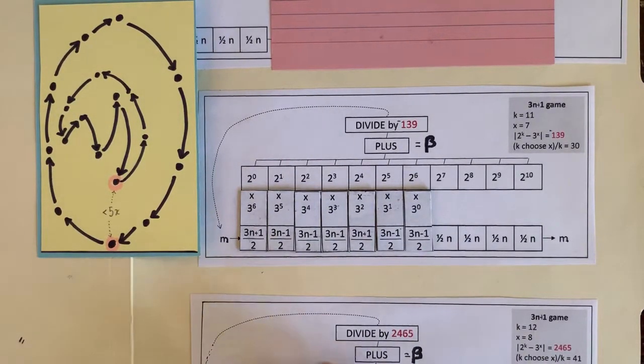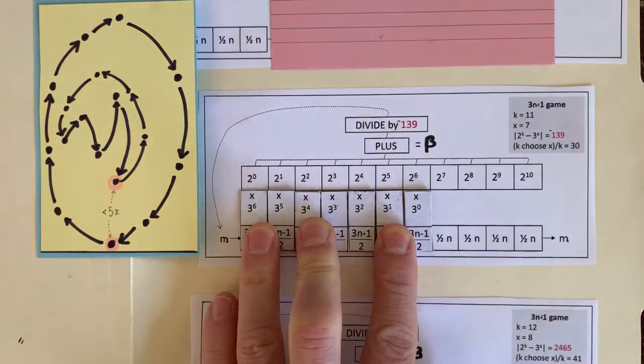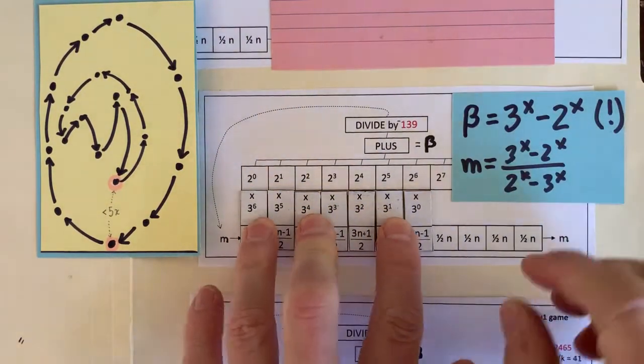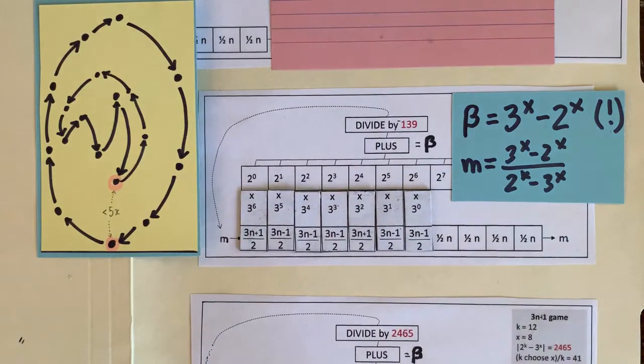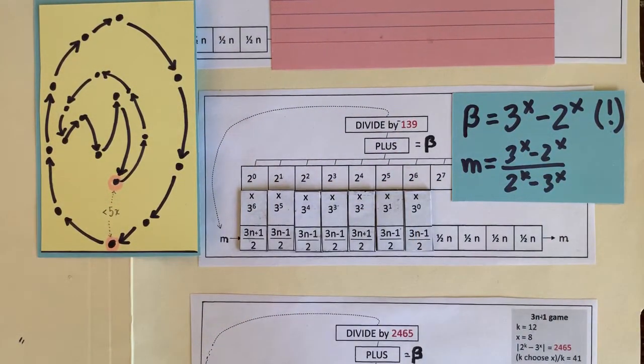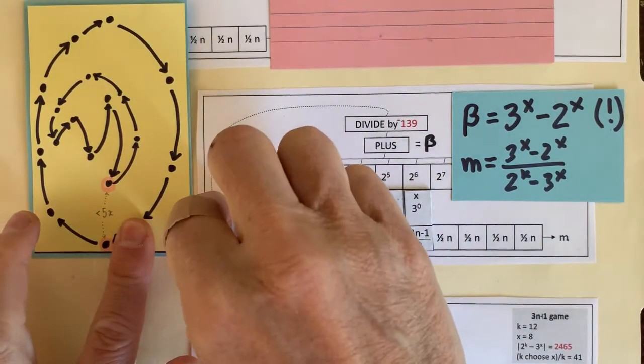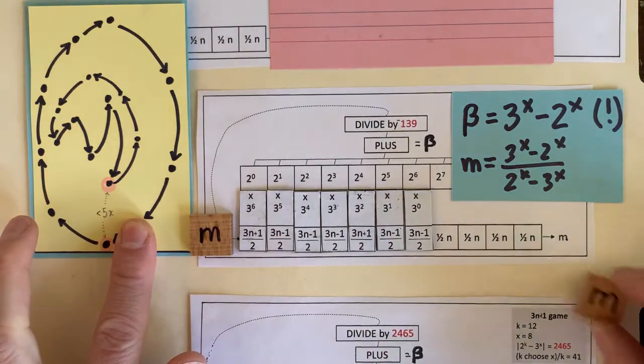Second, it's super easy to calculate the lowest member of the circuit. When we add up all these products, powers of 2 and 3, this beta simplifies to just 3 to the x minus 2 to the x, which is really amazing. So the bottom of the loop is just 3 to the x minus 2 to the x divided by 2 to the k minus 3 to the x.